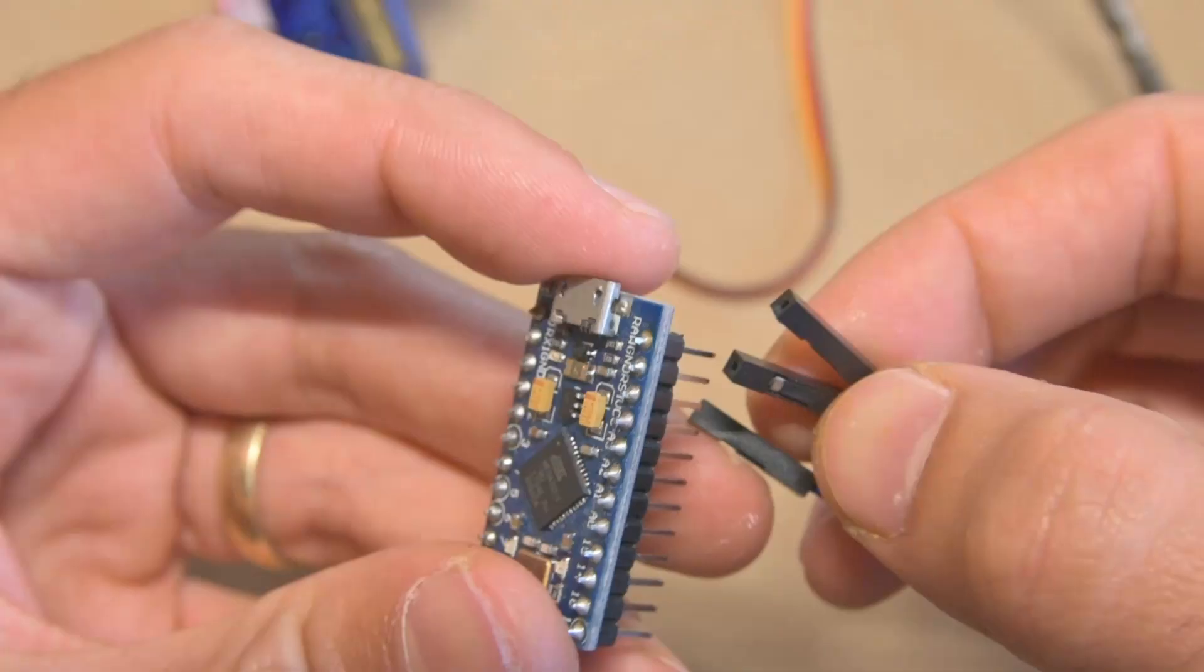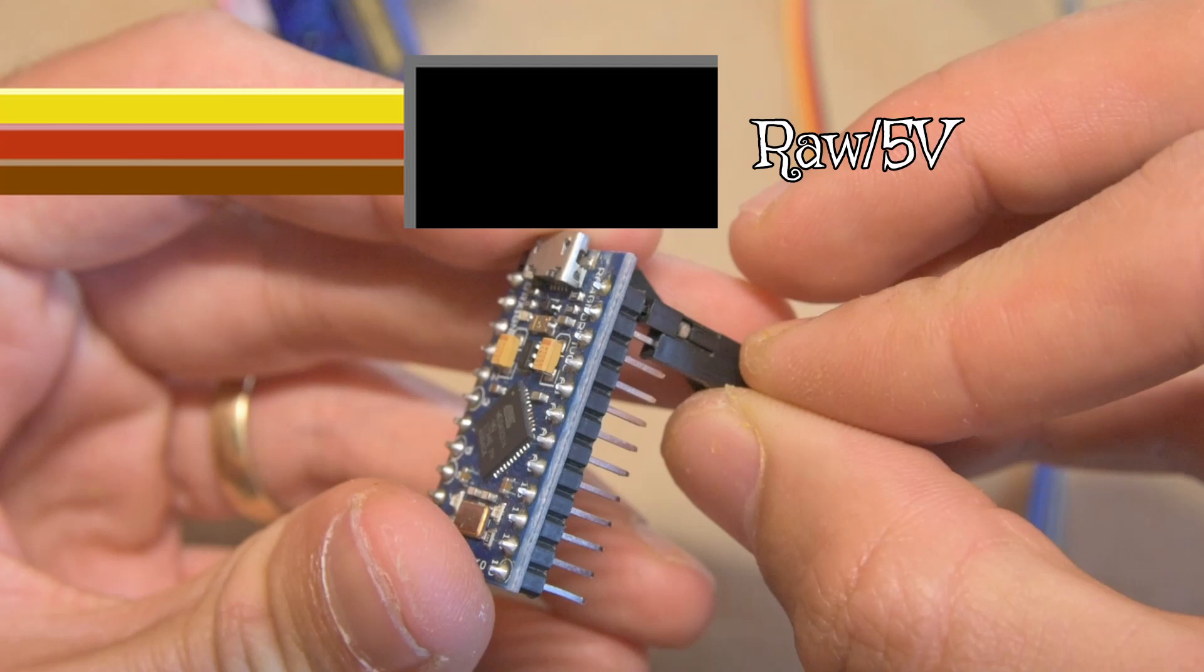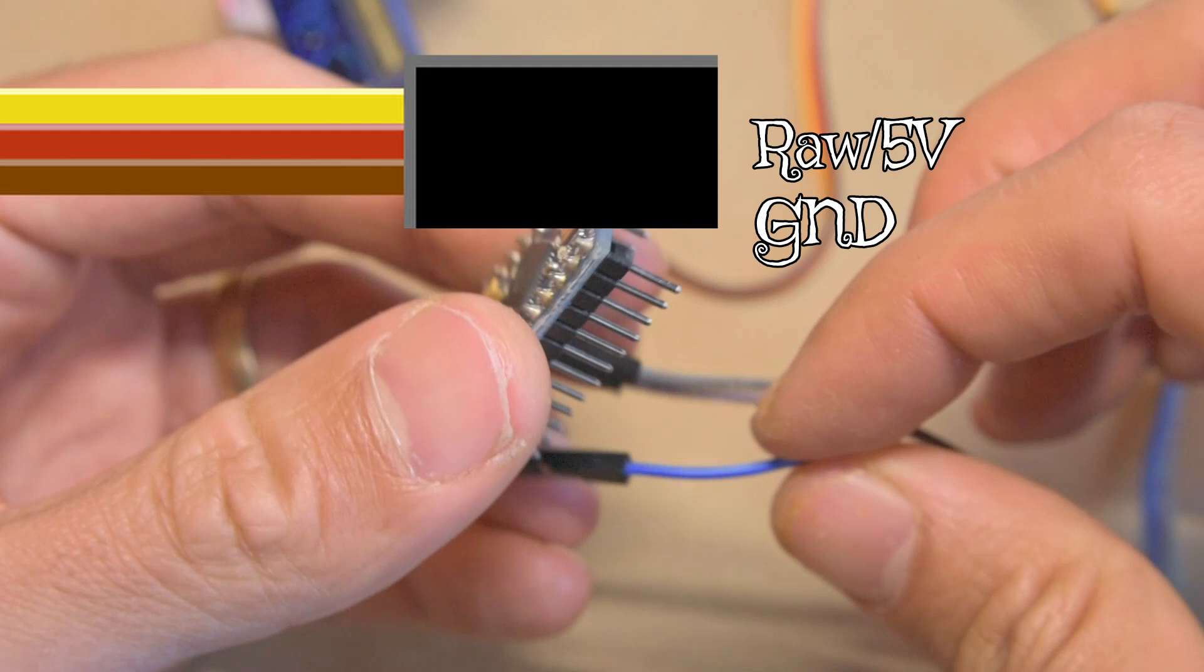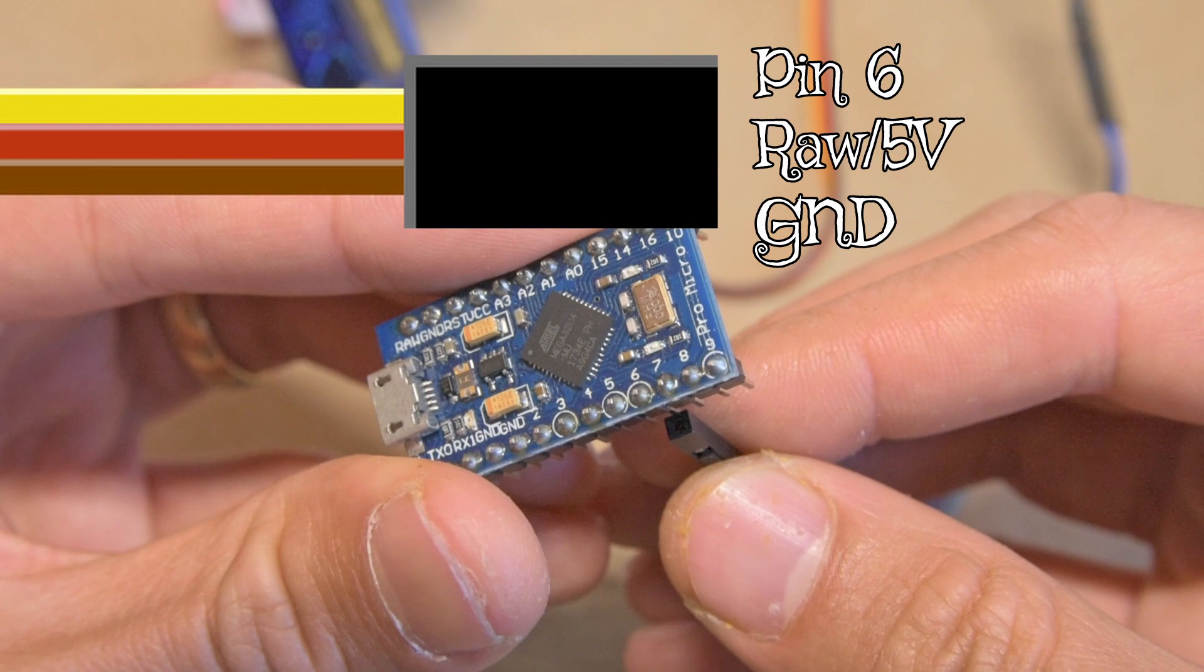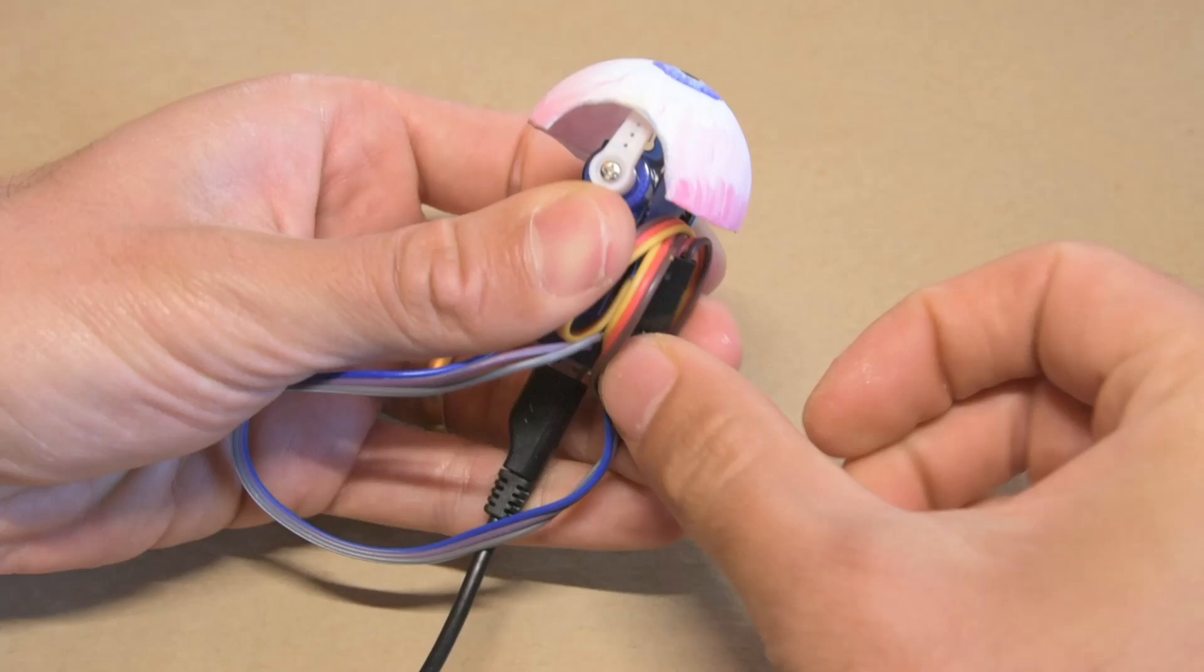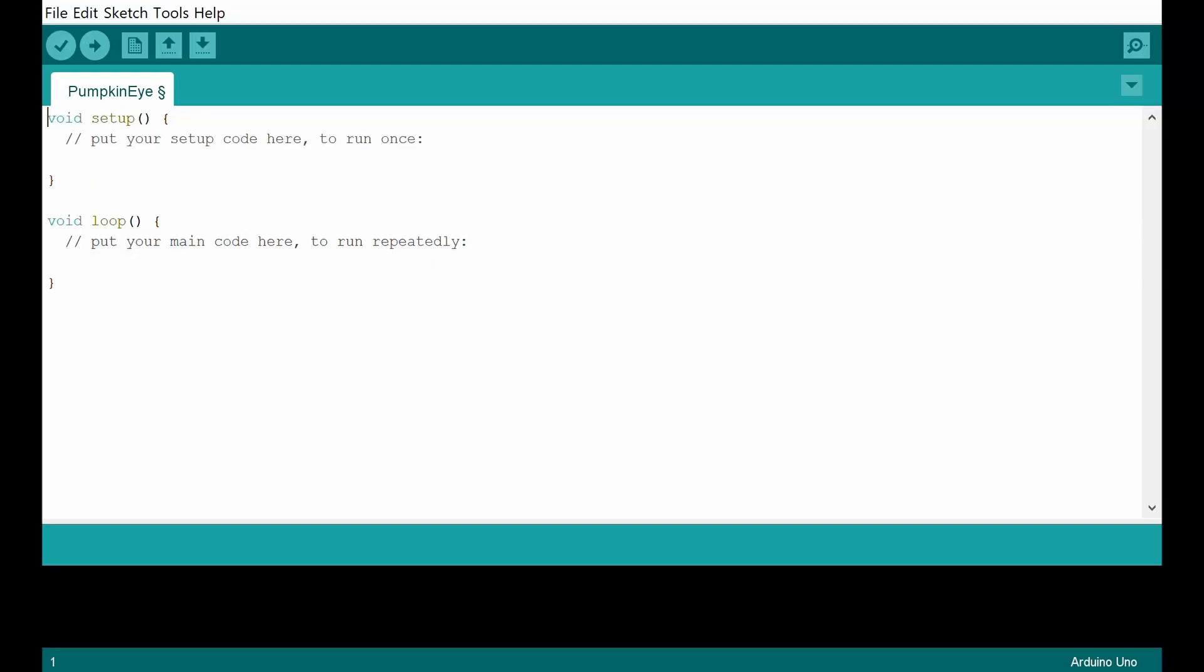The servo's red wire connects to raw for 5V power, and its brown or black wire connects to ground. The servo's signal wire, which will be yellow or white, connects to pin 6. To hold everything together and keep the wires neat, I flipped the Arduino over, slid the motor between the two rows of pins, and then wrapped the whole thing in painter's tape.